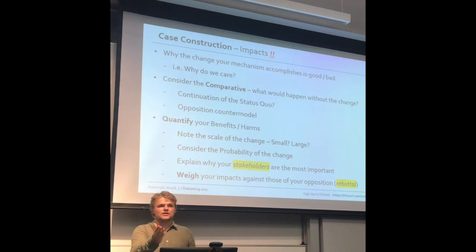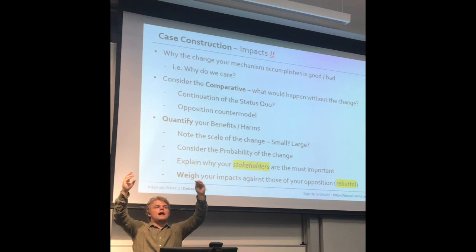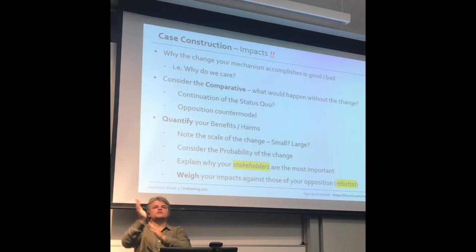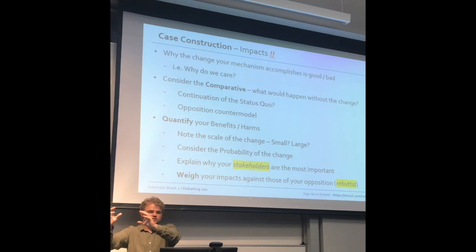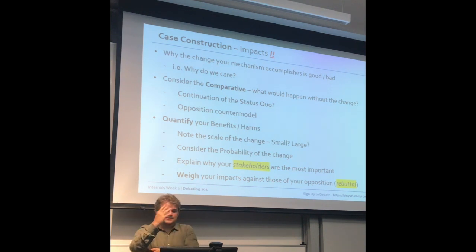You might also consider the probability of that change taking place. Maybe you're trying to claim a monumental benefit like destroying racism — that's a hard goal. But if there's a 50% chance of achieving that, you would explain you're more likely to get to that goal than the status quo would be. Another way to quantify your benefits and harms is to explain why your stakeholders are the most important.